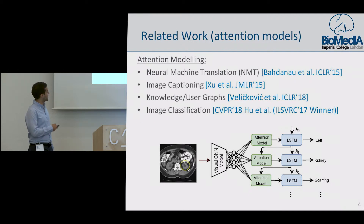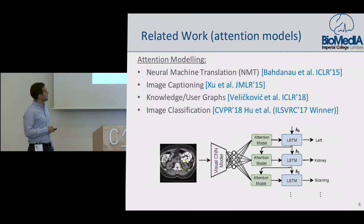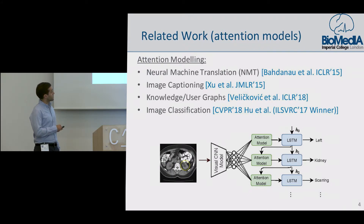I want to briefly go through this example. Let's say that we have this abdominal CT image. The main idea is we pass it through an image convolutional network and obtain a set of features. For the image captioning problem, we need to do sequence modeling, and with this LSTM we have hidden units. For every given hidden unit, attention models basically do linear rating across these features.